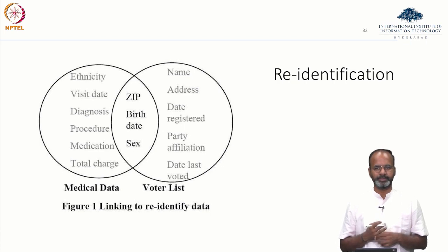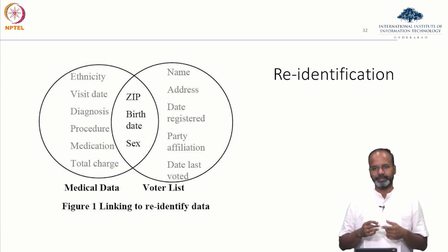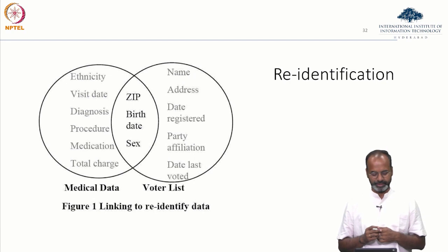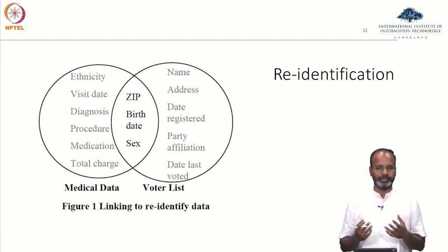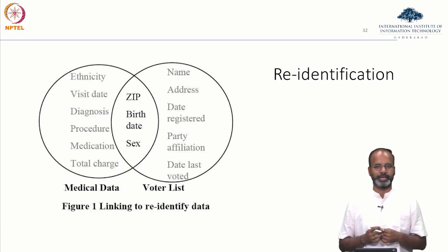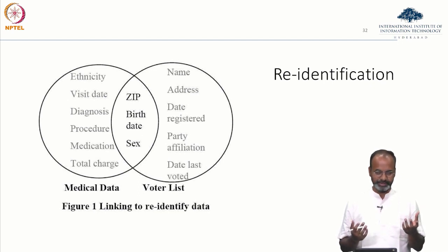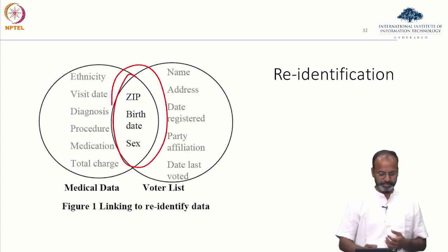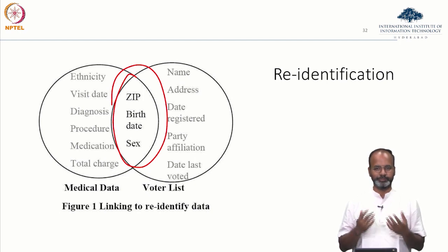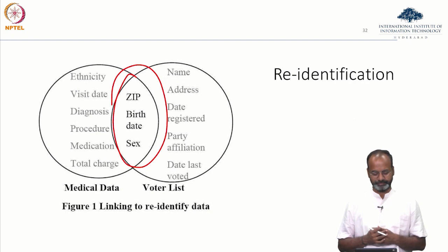One concept we will delve into more later in the semester is re-identification and anonymity techniques. This became very popular through work done by Latanya Sweeney at MIT. What she did was take medical records and voter lists, put them together, and found that just the zip code, birth date, and gender would be useful in re-identifying people in the US.